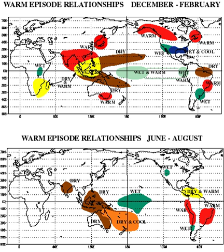Major ENSO events were recorded in the years 1790–93, 1828, 1876–78, 1891, 1925–26, 1972–73, 1982–83, 1997–98, and 2014–16. Typically, this anomaly happens at irregular intervals of two to seven years and lasts nine months to two years. The average period length is five years.